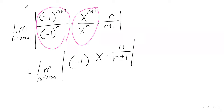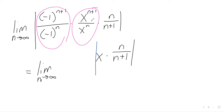The argument here is that if we've got an absolute value, we can break it into two absolute values — the absolute value of a product is the product of the absolute values. The absolute value of negative one is positive one, and multiplication by positive one doesn't do anything. So we're left with just the absolute value of x times n over n plus one.